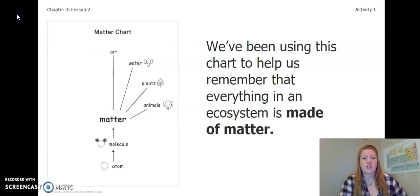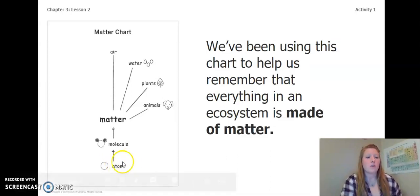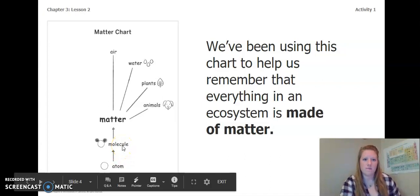We've been using this chart to help us remember that everything in an ecosystem is made of matter. So if we look at our chart, we have our atom, which is the smallest, and it makes up everything. Two or more atoms combined is a molecule, and molecules make up matter.